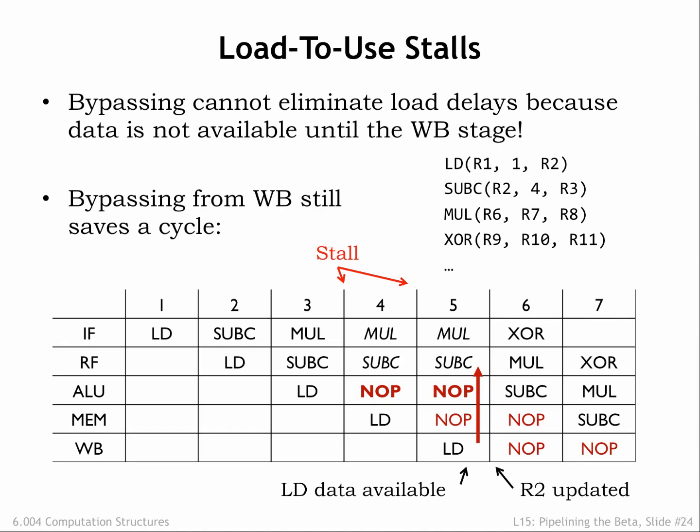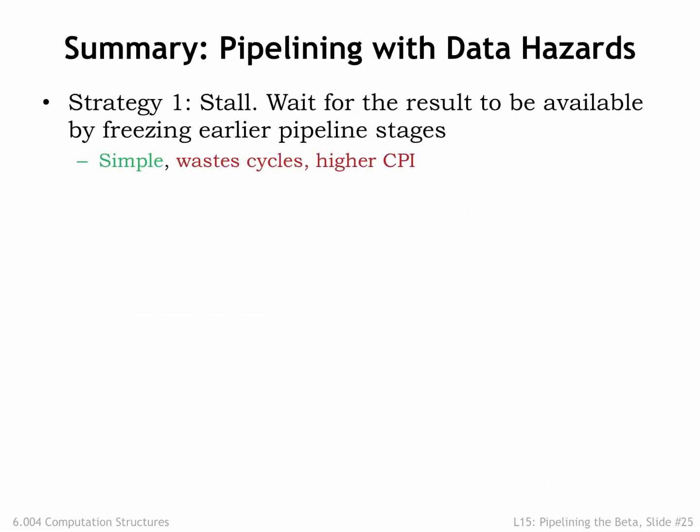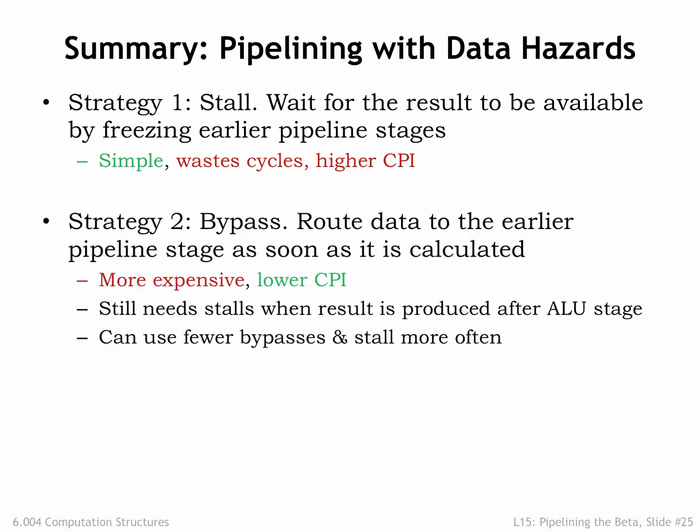Load data isn't available in the datapath until the cycle when the load reaches the write-back stage. Even with full bypassing, we'll need to stall SUBC in the RF stage until cycle 5, introducing two NOOPs into the pipeline. Without bypassing from the write-back stage, we need to stall until cycle 6. In summary, we have two strategies: stall the IF and RF stages until register values are available — simple hardware but higher effective CPI — or use bypass paths to route required values to the RF stage, requiring more hardware but maintaining CPI. Even with bypassing, we still need stalls to deal with load-to-use hazards.